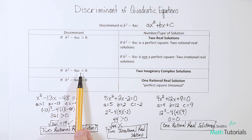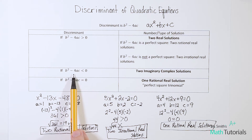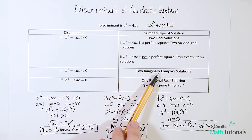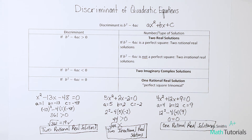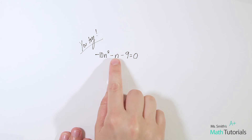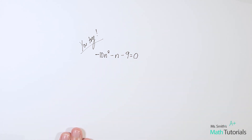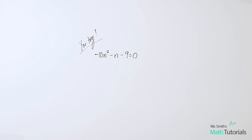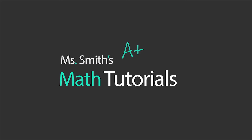Remember: if the discriminant is less than zero — a negative number — you'd have two imaginary complex solutions. Now here's one for you to try: negative 10n squared minus n minus 9 equals zero, where there's an understood negative one in front of n. Use your discriminant, b squared minus four times a times c, and tell me the number of solutions and type of solution. I will post the answer in the video description below. This has been Ms. Smith's Math Tutorials.